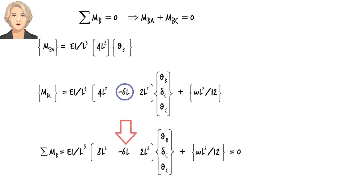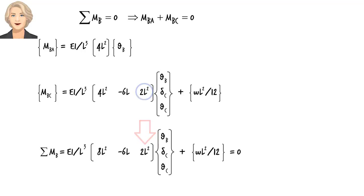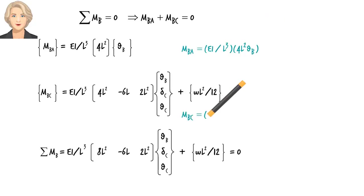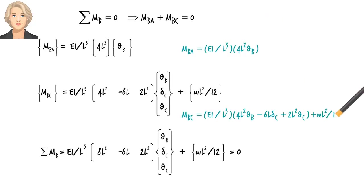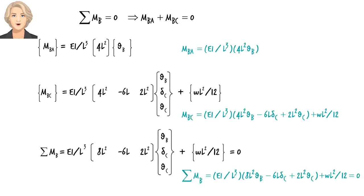To better understand this addition operation, let's view the equations in algebraic form. Here is the first equation, here is the second equation, and here is their sum — it equals zero. You may want to spend a few minutes examining the relationship between the two notations.